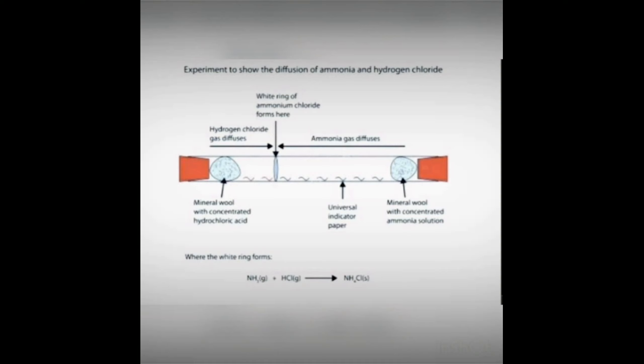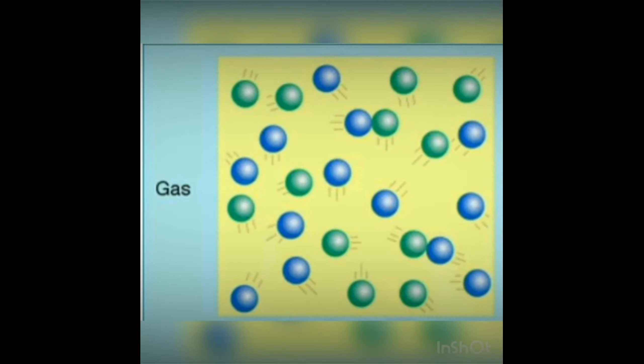We also observe that ammonia gas travels faster. Gases diffuse much faster than liquids because the space between gas particles is very large and the speed of gas particles is very high. These are the two reasons for higher diffusion in gases. The intermolecular forces between gas particles are negligible. These are the various properties of gases.